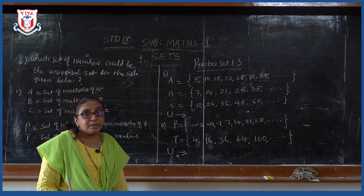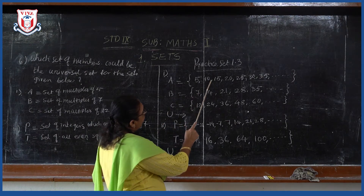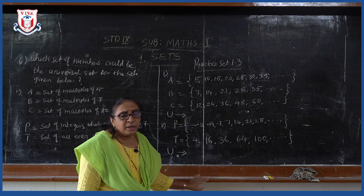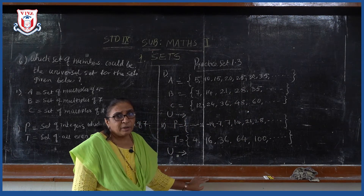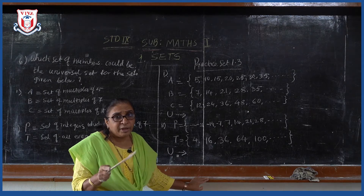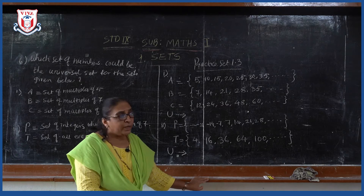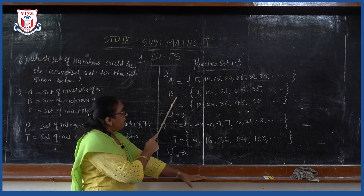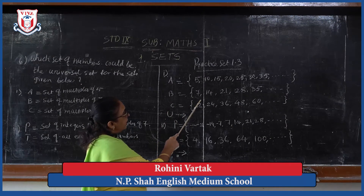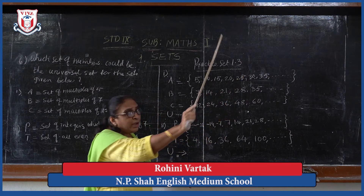You know what multiples means. Multiples of 5 means 5, 10, 15, 20 and so on. It is an infinite set because there is no condition where this set will end — there is no ending. Multiples of 7: set B will have the elements 7, 14, 21, 28, 35 and so on.